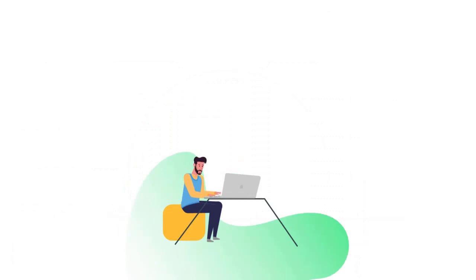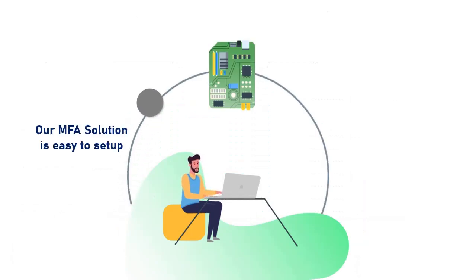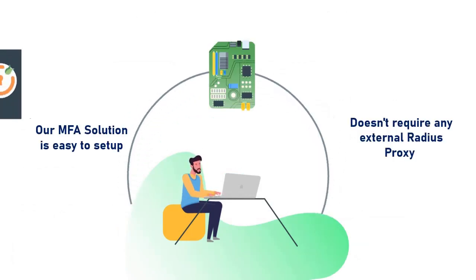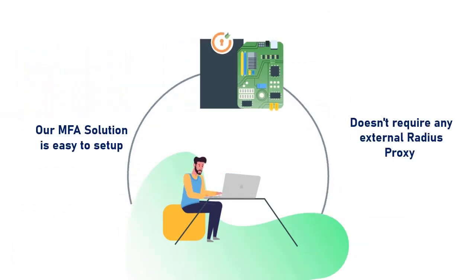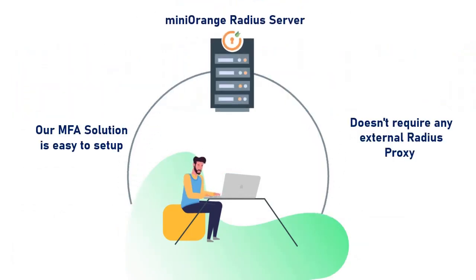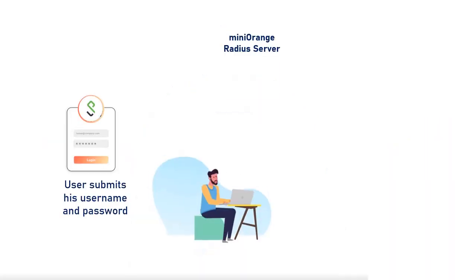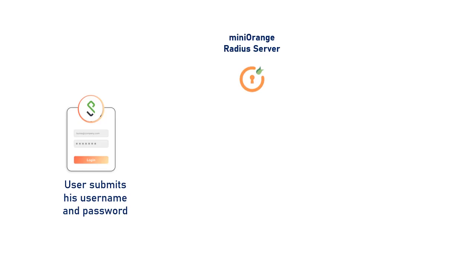Unlike other MFA solutions, our solution is easy to set up and does not require any external Radius proxy module to be installed on top of your Pulse Secure servers. The user submits his username and password, which is accepted by the Mini Orange Radius server as a Radius request.